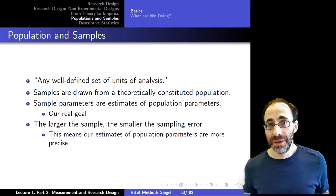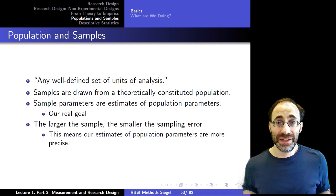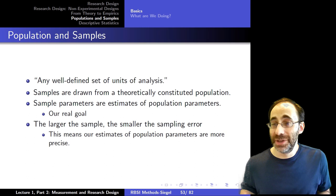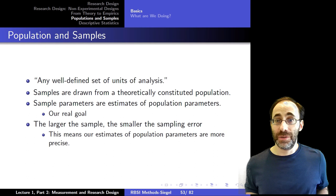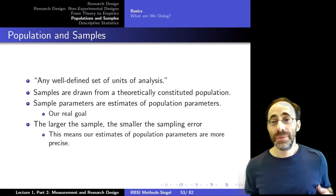In some cases that's not true. If your population is countries, you can often get data on all the countries in the world, in which case you have the entire population of data relevant to you. But in a lot of cases you simply can't get data on all the members of your population. If your population is all citizens of voting age in the U.S., that is many millions of people, so you're not going to ask every one of those millions of people their opinions. Instead, what you do is take a sample from the population.